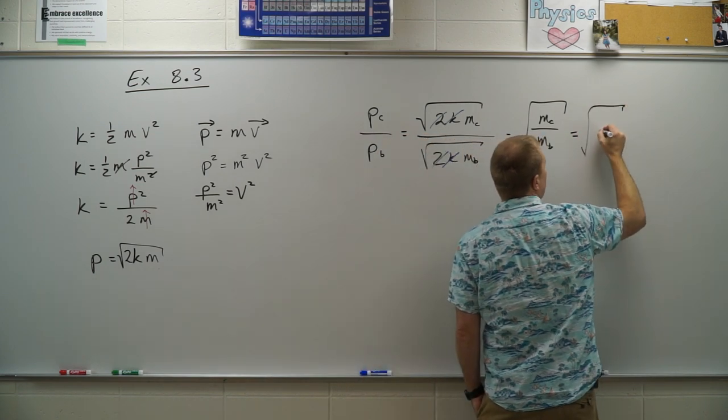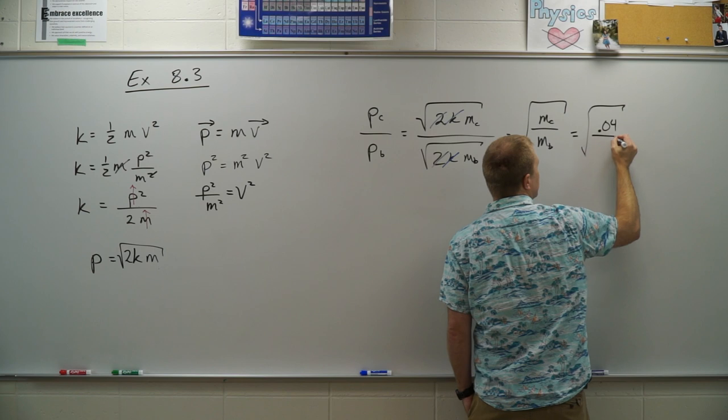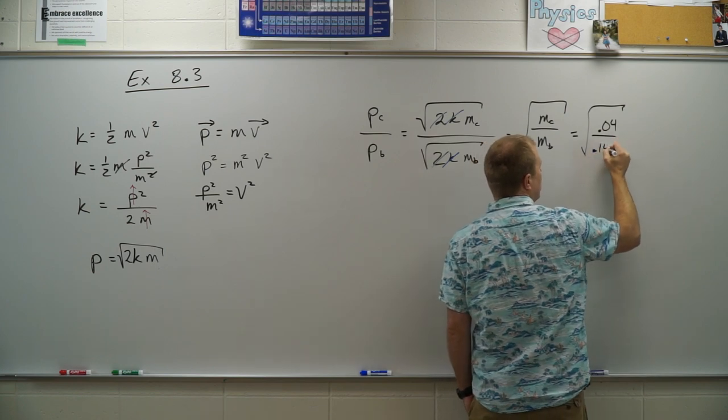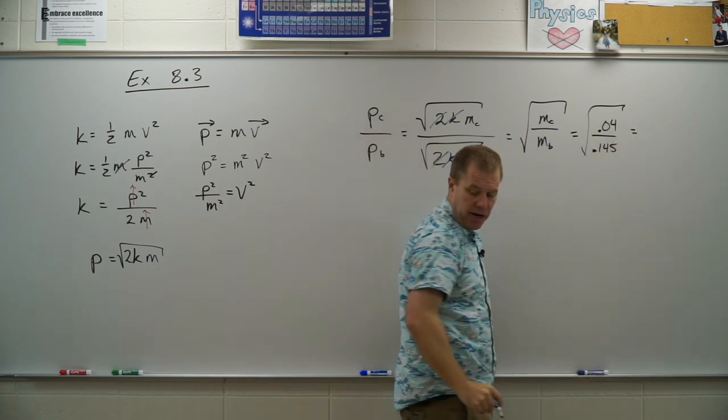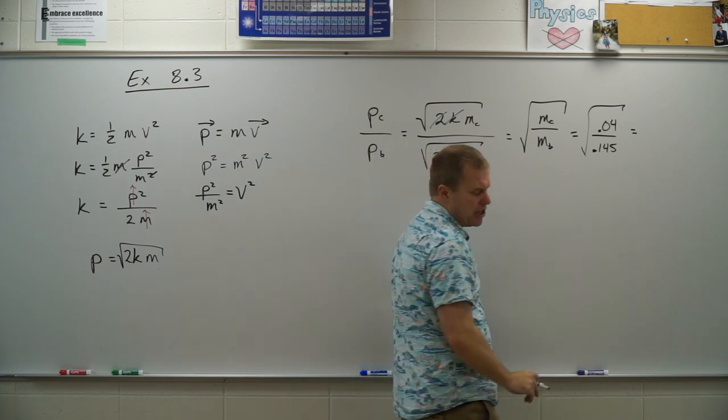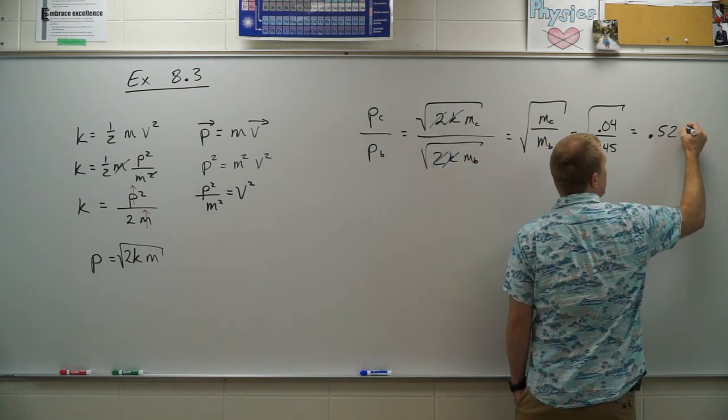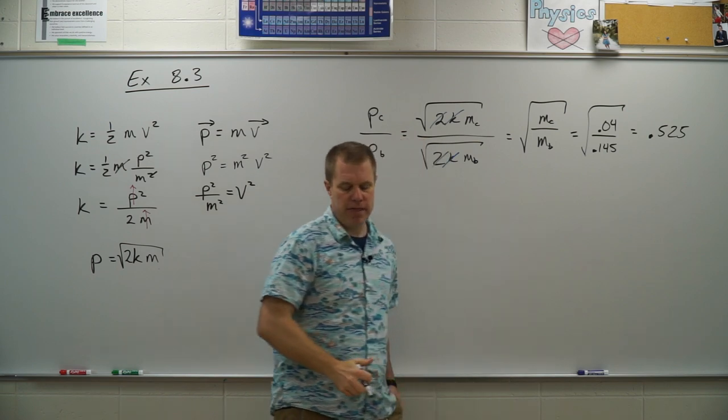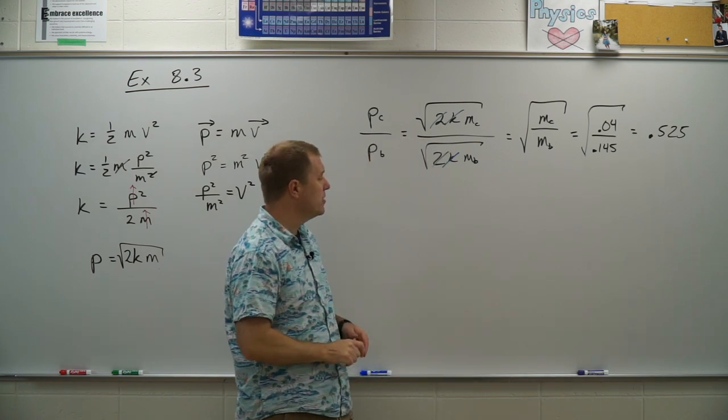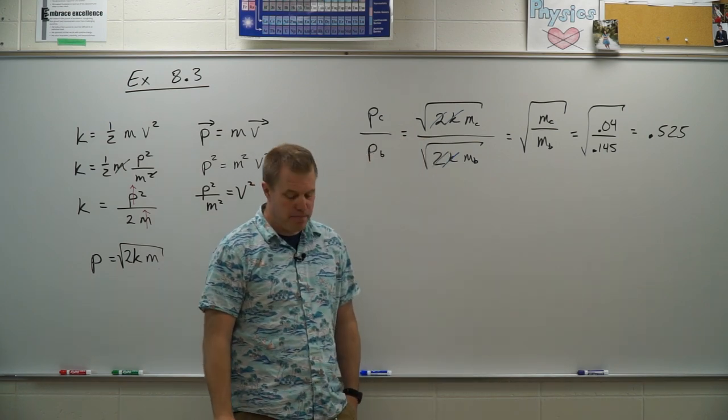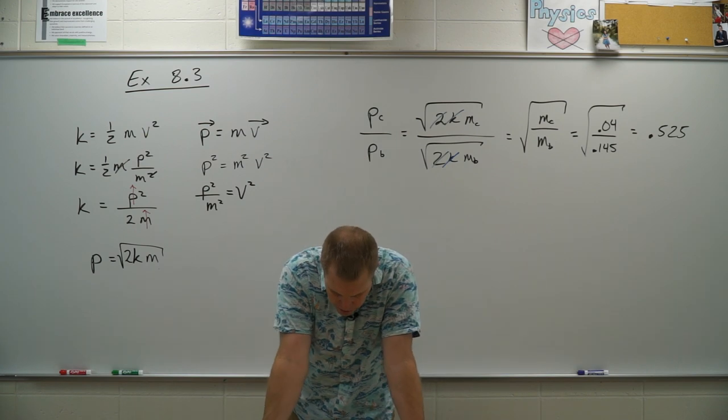So I have the square root of 0.04, the cardinal's mass, divided by the baseball, 0.145. When I plug that in my calculator, I get a ratio of 0.525 for the ratio of the momentum of the cardinal to the momentum of the baseball. Let's do part C then.